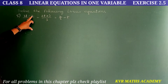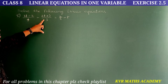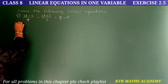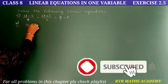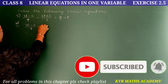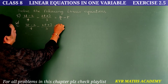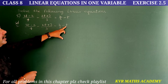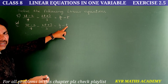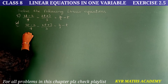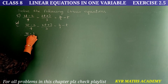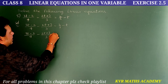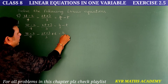Fifth question: (3t - 2)/4 - (2t + 3)/3 = 2/3 - t. Let us solve. Given equation: (3t-2)/4 - (2t+3)/3 = 2/3 - t. Transfer t from the RHS to the LHS: (3t-2)/4 - (2t+3)/3 + t = 2/3.